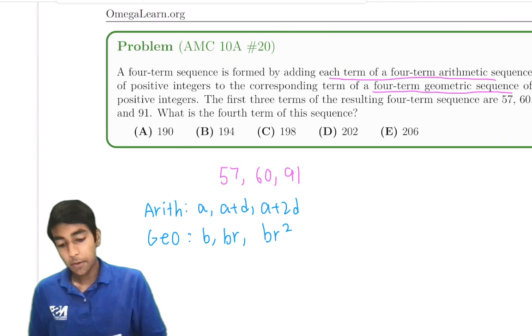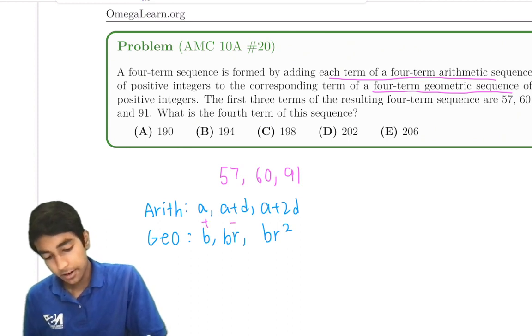So what we're given is that when we add each of these terms together, they give 57, 60, 91.